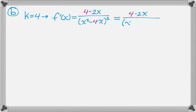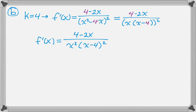So first I'm just going to factor the derivative a little bit to make it easier to determine the sign change, if there is one. So I factored an x out of x squared minus 4x, so I have the denominator now as (x times (x minus 4)) squared. And that can be rewritten as 4 minus 2x over x squared times (x minus 4) squared.